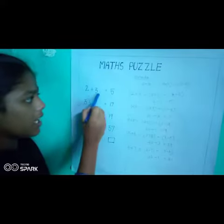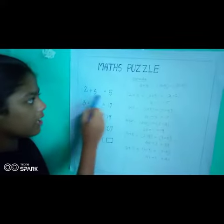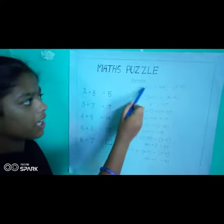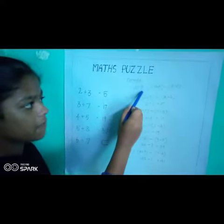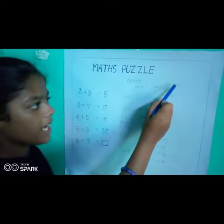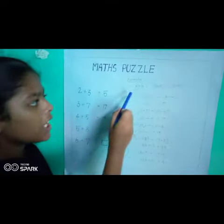2 plus 3 equal to 5. It is not correct. Use this formula: A plus B equal to A into B minus B minus A.